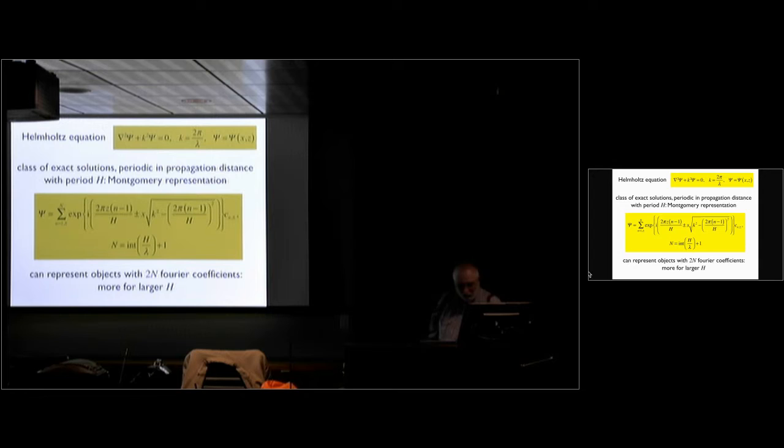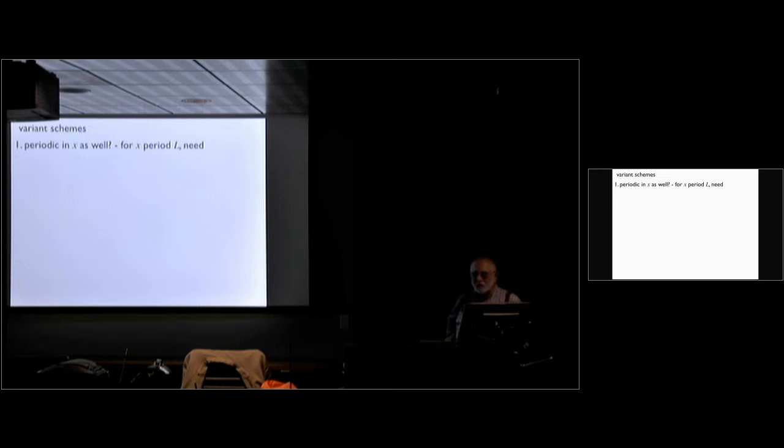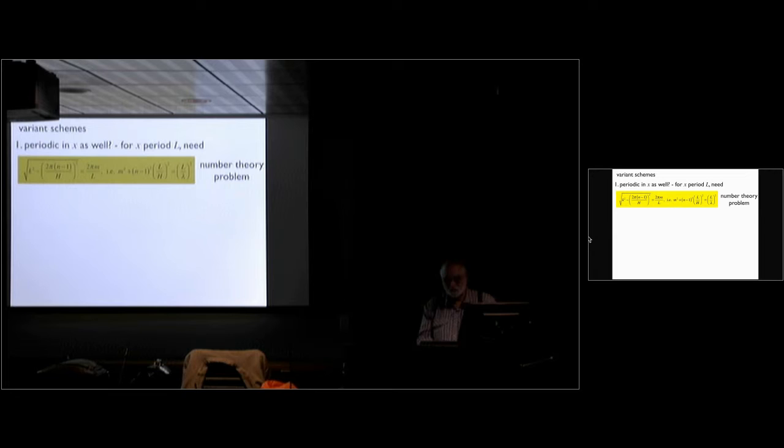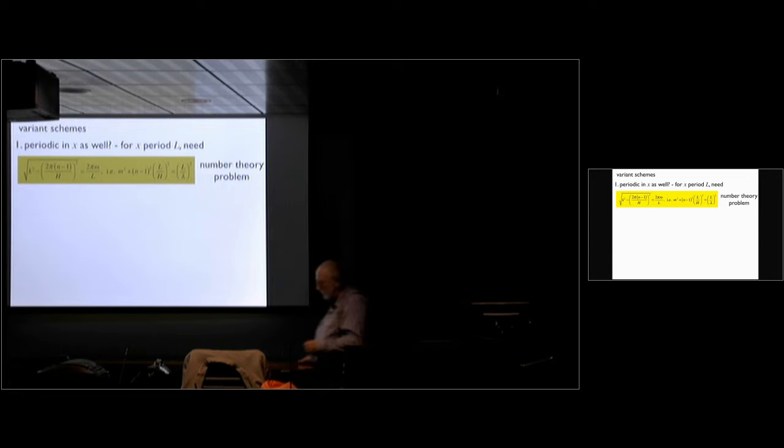The farther you want to reproduce, the more coefficients you can include in the description of your object. So you can represent objects with 2N Fourier coefficients, and 2N is roughly 2H/λ. In principle you can sample an object with more Fourier coefficients the farther away you want this information to propagate — which sounds like a very good thing. That's what microscopy is: you have something here but you want to propagate the information and look at it far away.